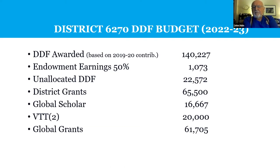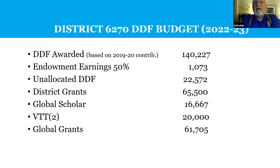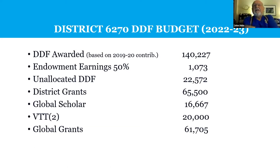Our district foundation committee decided we would fund this year both a Global Scholar and two VTT programs. VTT programs require $15,000 apiece; we decided to give $20,000 of DDF and fund two programs — a Guatemala Smiles program and a Belize Hospital Supply program. They also added environmental to the areas of focus, and we had the first international scholar in environmental. That leaves $61,705 for Global Grants.